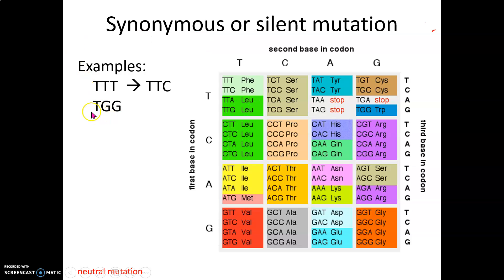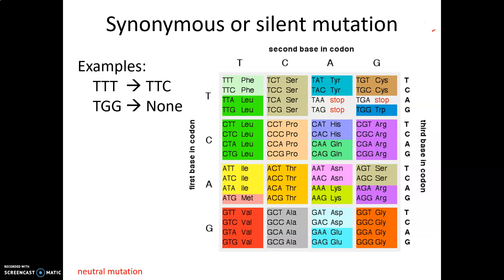What about TGG? Can we introduce a synonymous mutation for TGG? TGG codes for tryptophan, and tryptophan doesn't have a synonymous codon, so we couldn't have a synonymous mutation with TGG. Synonymous mutations change the base pair sequence but don't change the protein. Because they don't change the protein, these are often considered neutral mutations — they have no detectable effect on protein function.